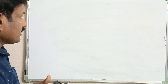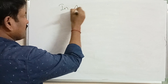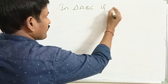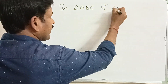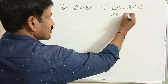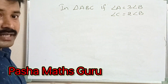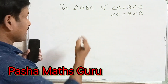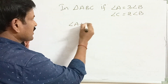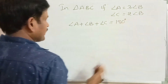Let us move on to the next example. In triangle ABC, angle A is equal to 3 times angle B, and angle C is equal to 2 times angle B. Then find all three angles of the triangle. We have angle A plus angle B plus angle C equals 180 degrees.